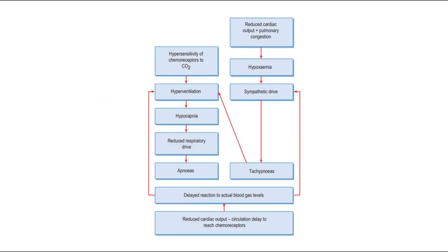This is a flowchart showing the mechanism of Cheyne-Stokes respiration. Hypersensitivity of chemoreceptors to carbon dioxide will cause hyperventilation to remove excess carbon dioxide, which causes hypocapnia and reduced respiratory drive, thus causing apnea. In congestive heart failure cases, there is reduced cardiac output and pulmonary congestion, which causes hypoxemia — low oxygen level. This activates the sympathetic drive and causes tachypnea and hyperventilation, then leads to hypocapnia, reduced respiratory drive, and apnea again. Hence in Cheyne-Stokes respiration, there is alternating apnea and tachypnea.